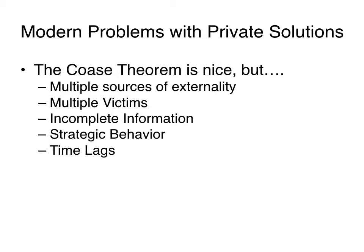The Coase Theorem works as long as you know who is doing the action and what the action is. In the real world, there are lots of times when you don't necessarily know those things, and you don't have true private property rights. For instance, there could be multiple sources of the externality — it's difficult to bargain with multiple sources, especially if you don't know who those sources are.